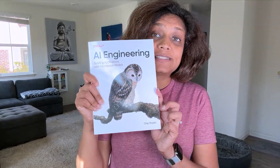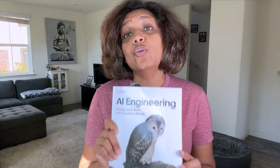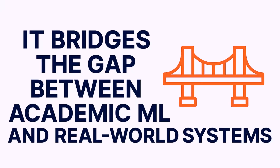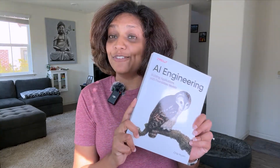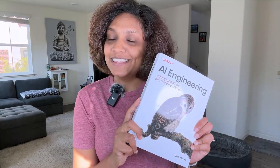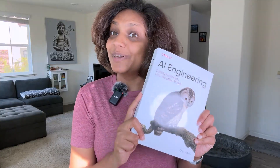Next, grab a copy of Designing Machine Learning Systems by Chip Huyen. This book is pure gold. It bridges the gap between academic ML and real-world systems. And I am about to do another deep dive on just this book very soon, so if you're interested, follow and subscribe so you don't miss that upcoming video.